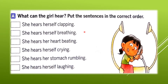Number 1: she hears herself breathing. That is the first thing she can hear. Number 2: she hears her heart beating. Number 3: she hears herself laughing.